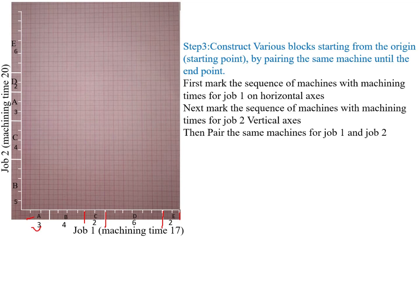For Job 2, the sequence is B, C, A, D, E with machining times 5, 4, 3, 6, and 2. The cumulative markings on the vertical axis are: Machine B at 5 units; Machine C at 9 units (5+4); Machine A at 12 units; Machine D at 14 units; and Machine E at 20 units.